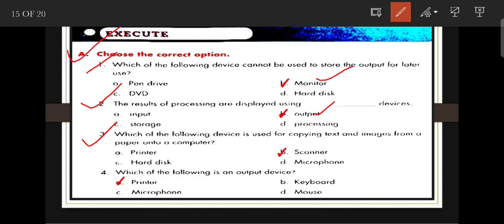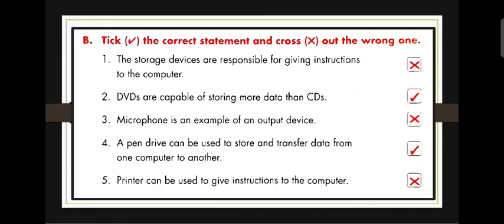Number three: Which of the following devices is used for copying text and images from paper onto a computer? Option B is the correct answer — scanner. Number four: Which of the following is an output device? Printer is the right answer — we use the printer to print the output or result.